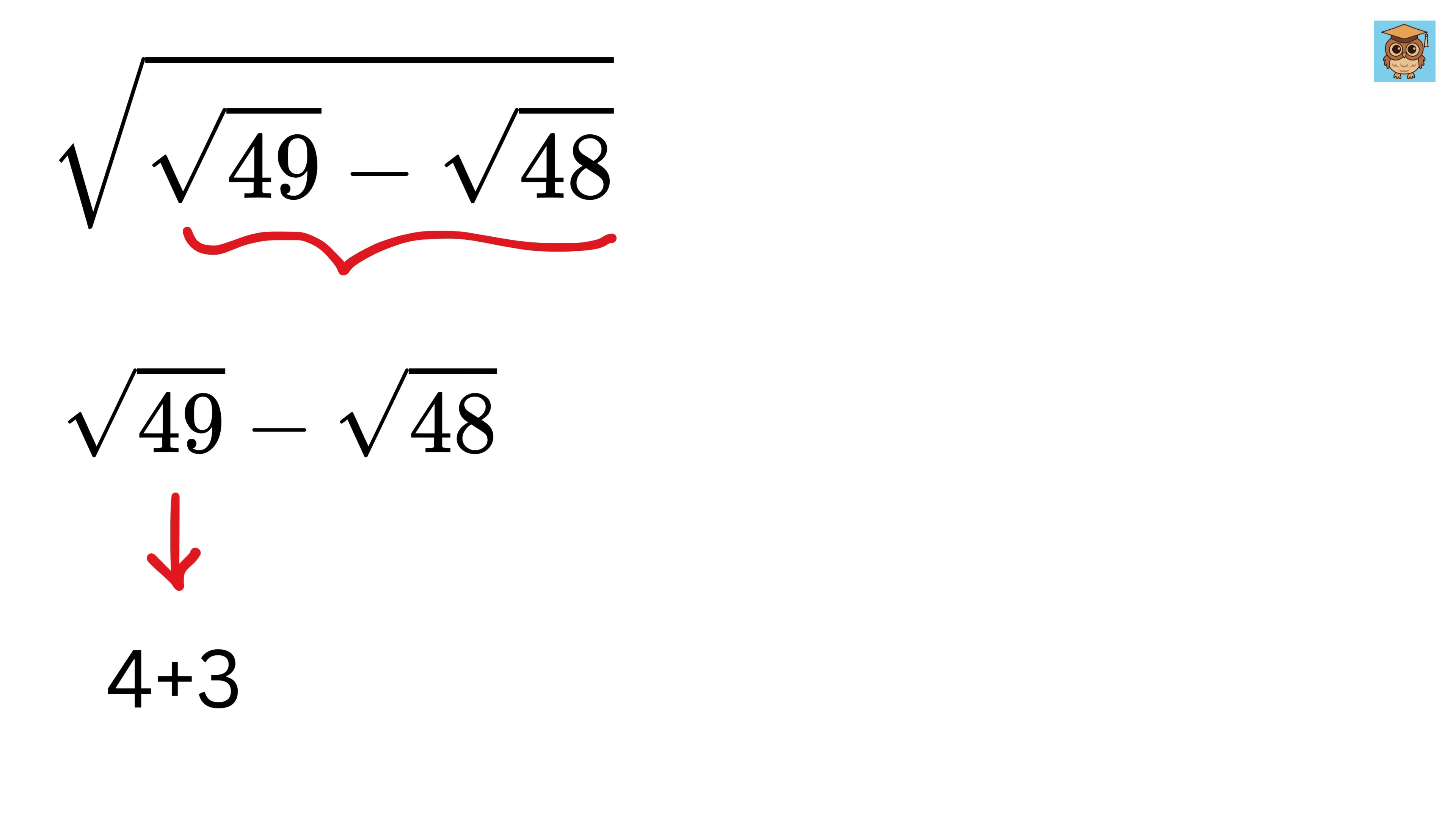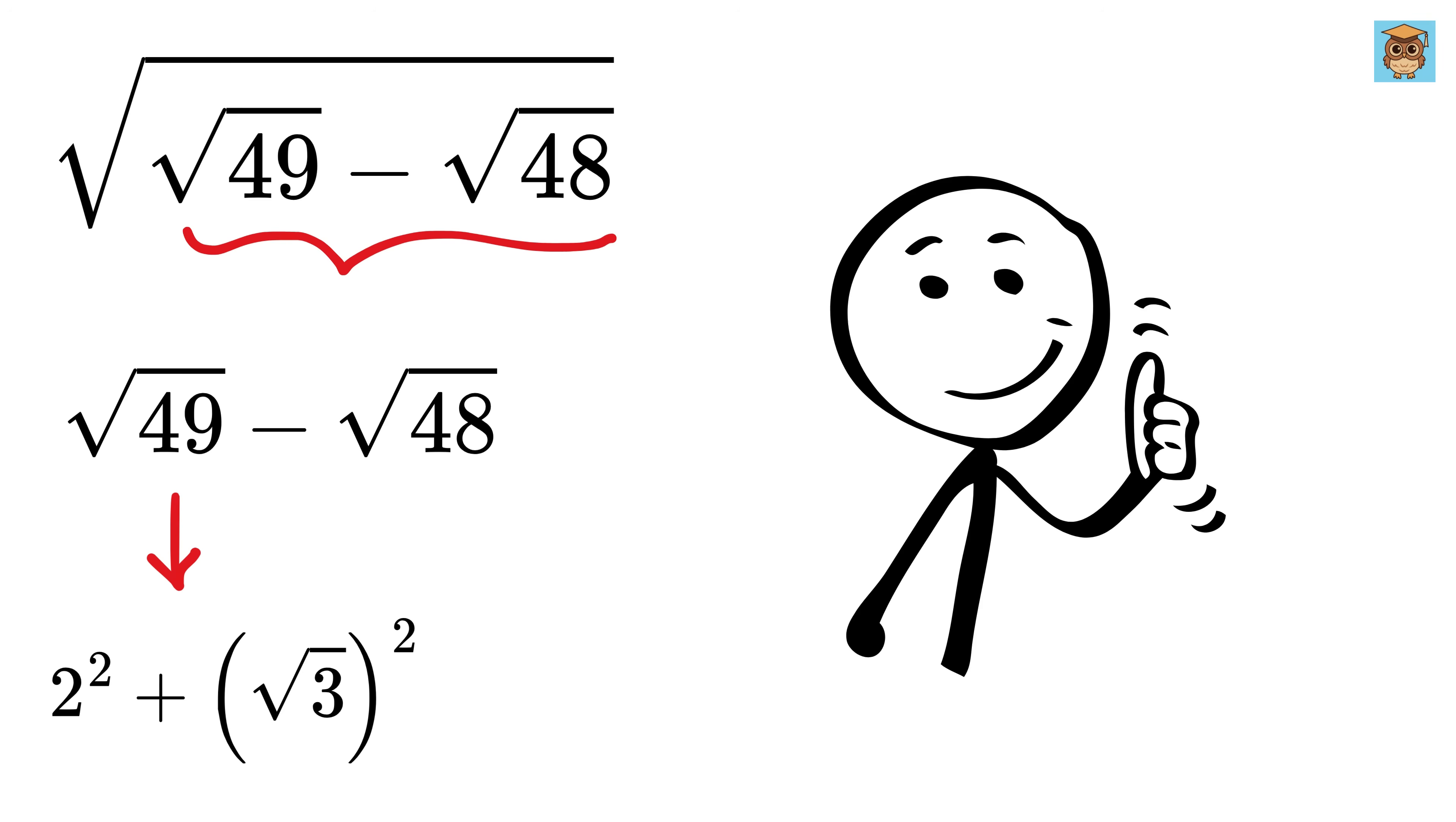Let's write 7 as 4 plus 3. 4 is 2 squared, and 3 is just square root of 3 whole squared. So that makes it 2 squared plus square root of 3 squared. Noice.